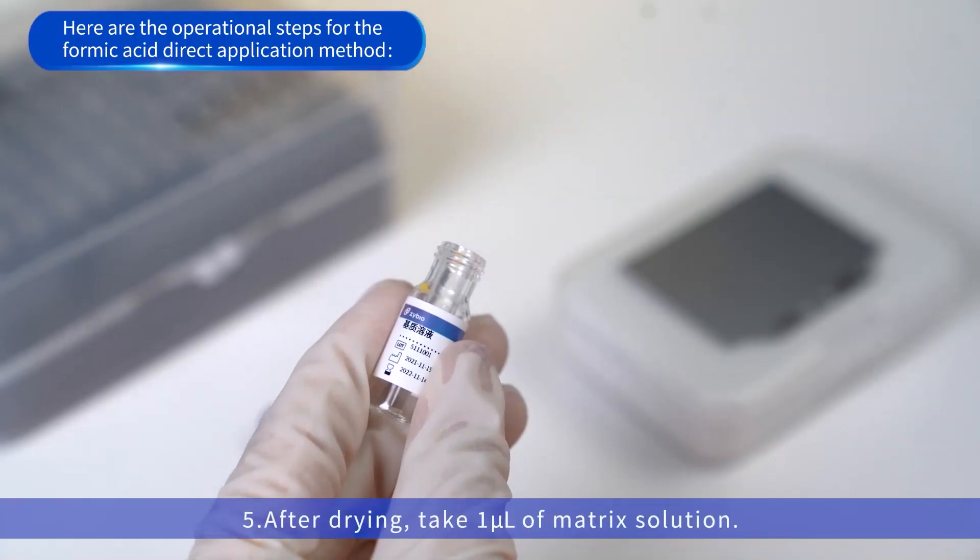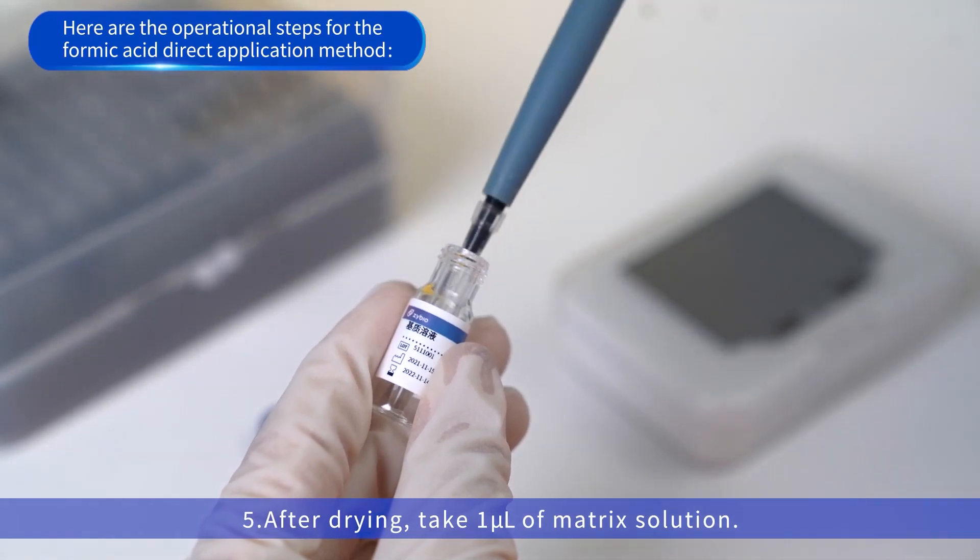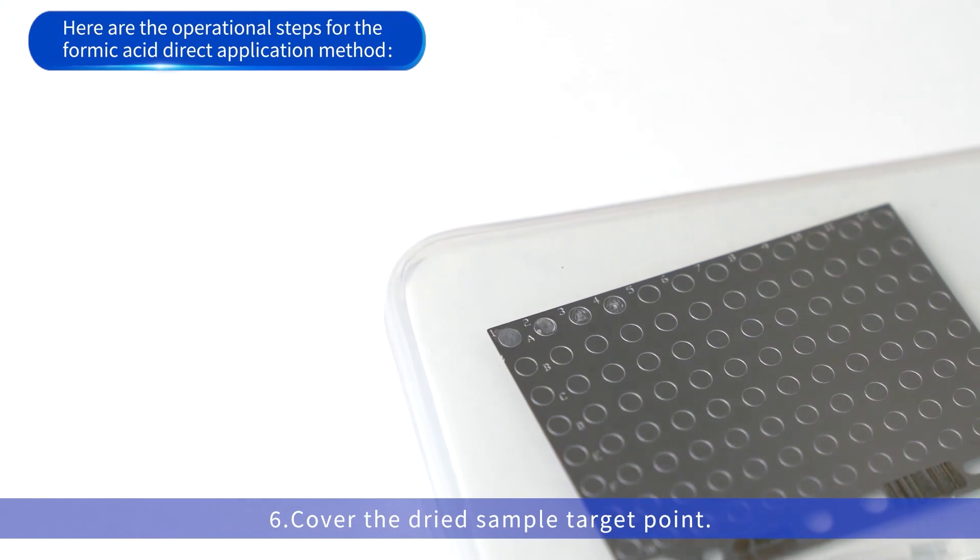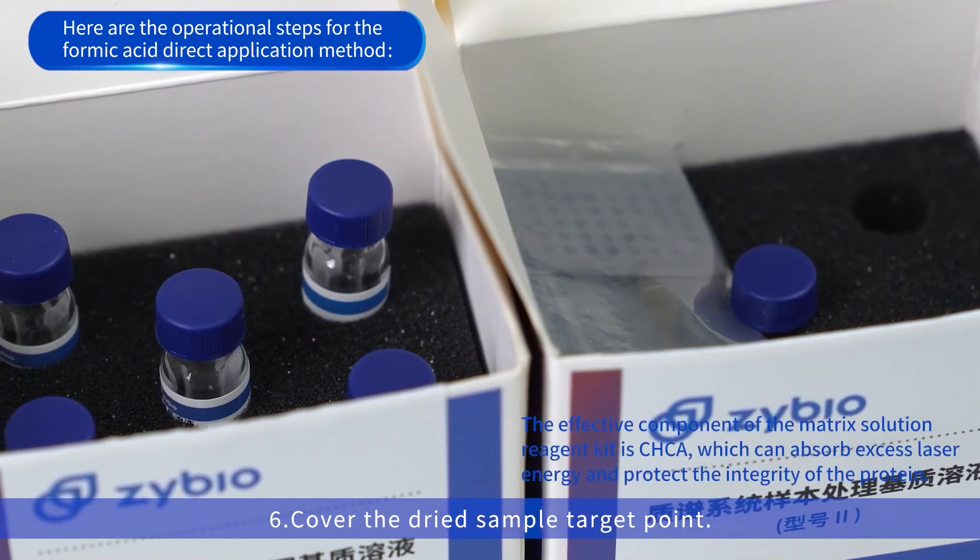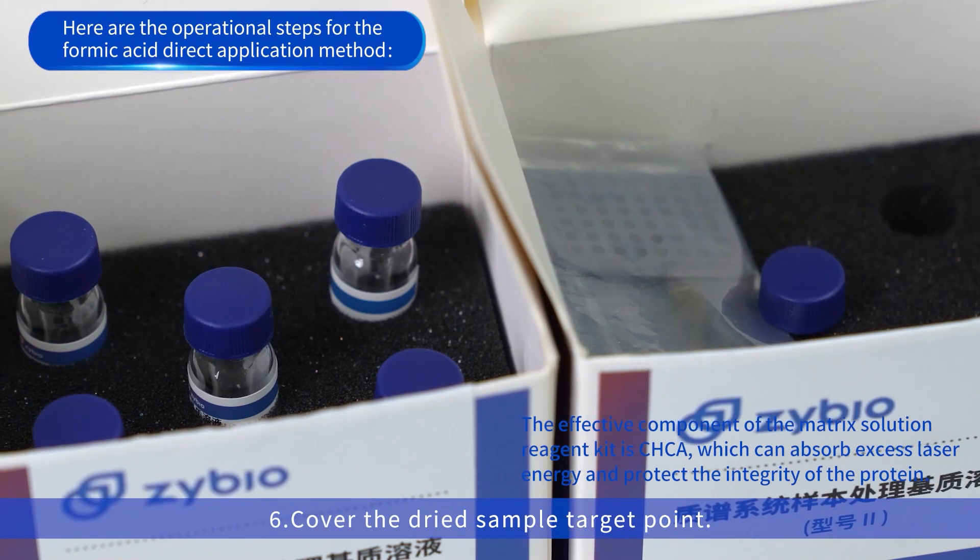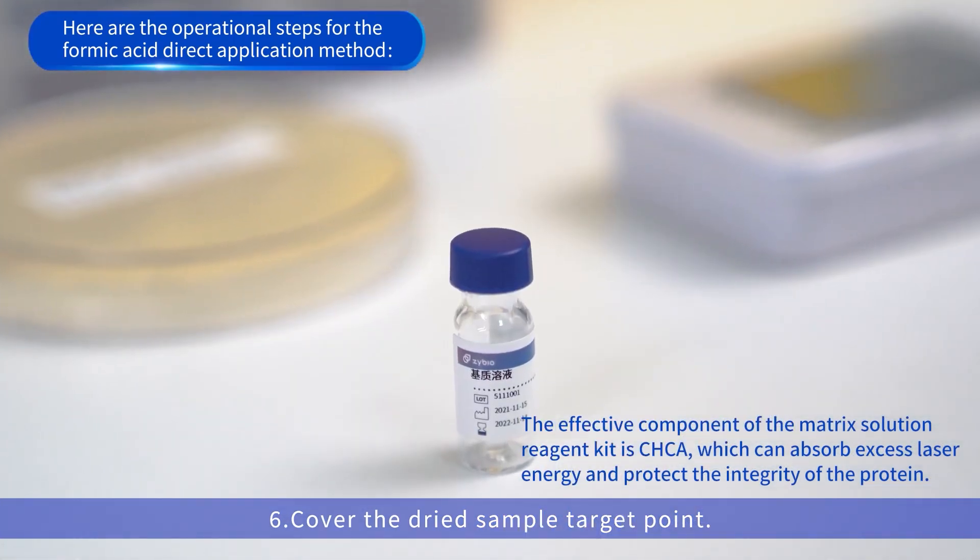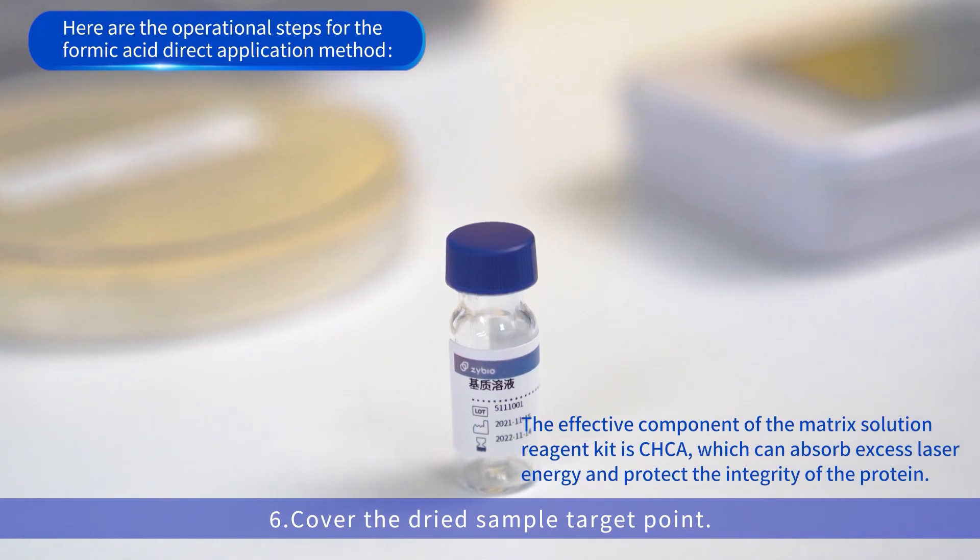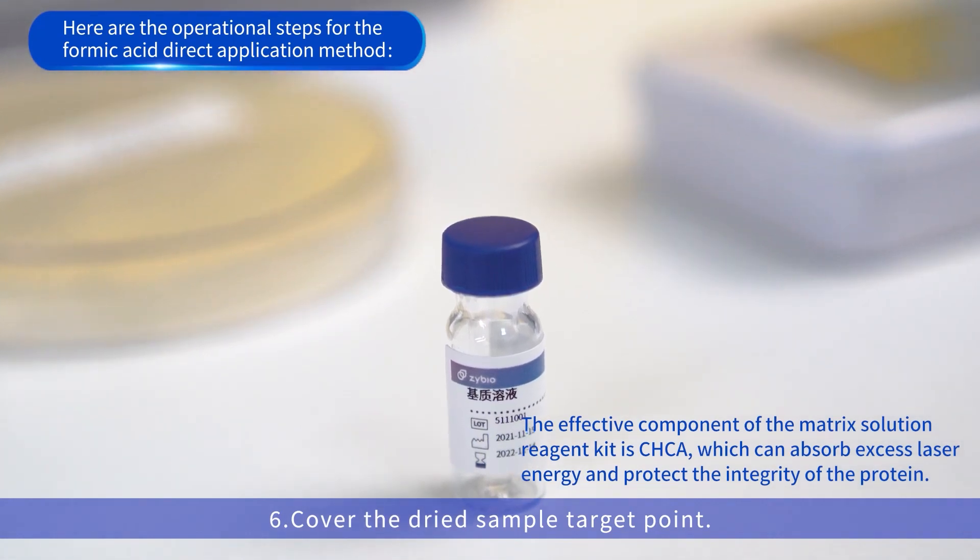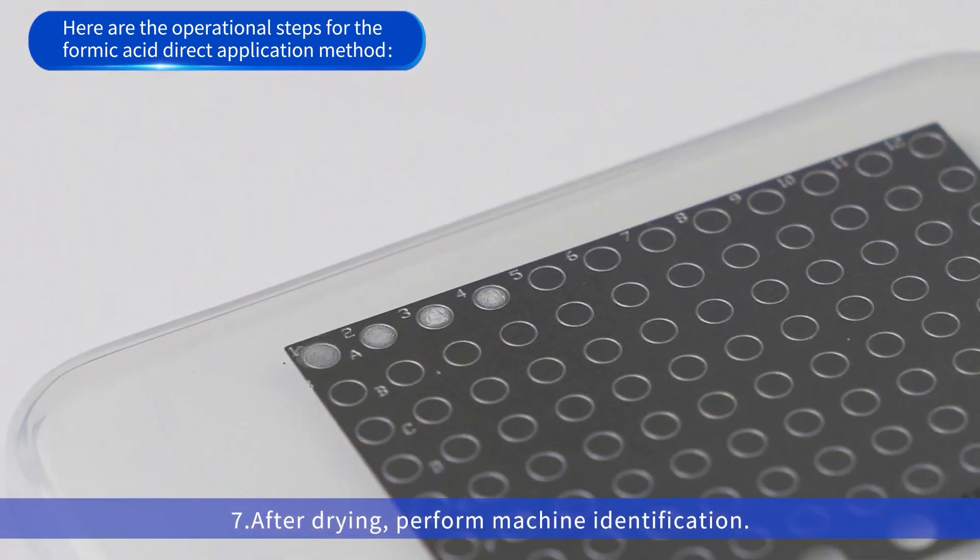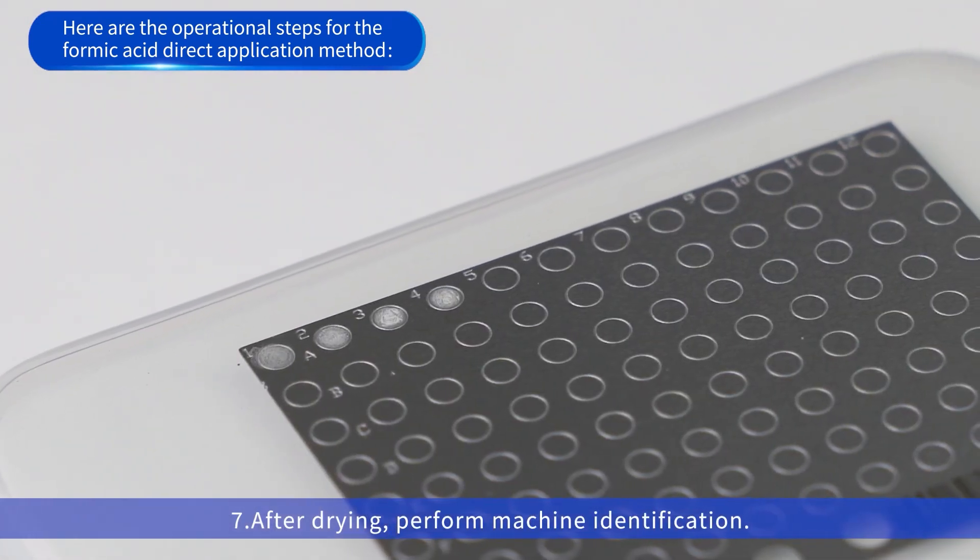Fifth, after drying, take 1 microliter of matrix solution. Sixth, cover the dried sample target point. The effective component of the matrix solution reagent kit is CHCA, which can absorb excess laser energy and protect the integrity of the protein. Seventh, after drying, perform machine identification.